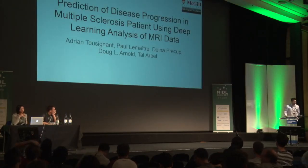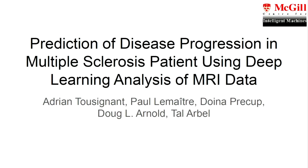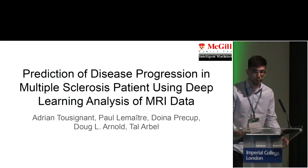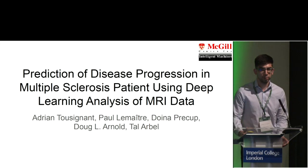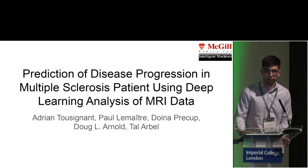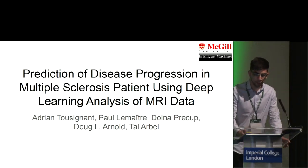Hi everybody, my name is Adrian Touzignan, I'm with the probabilistic vision group at McGill University, and I'm here to talk to you about my paper: prediction of disease progression in multiple sclerosis patients using a deep learning analysis of MRI data.